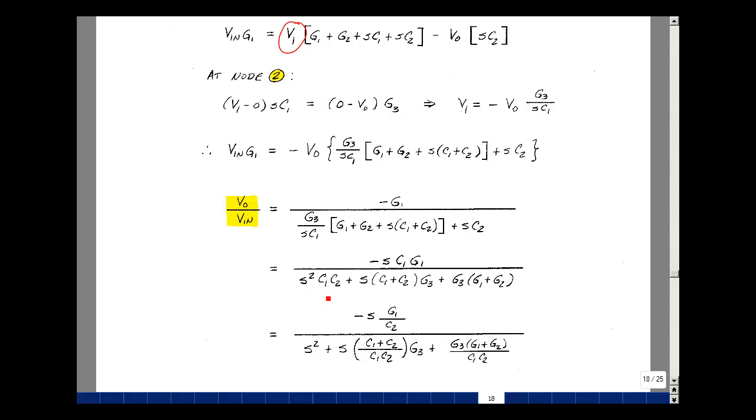Now let's divide through by C1 C2. I have a 1 for coefficient, dividing by C1 C2, and then dividing by C1 C2. And then in the numerator, C1's cancel, and I have just minus S G1 divided by C2.